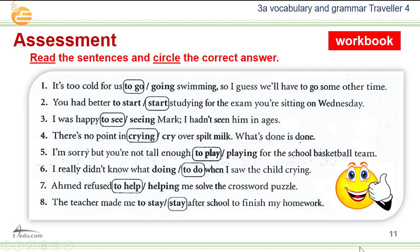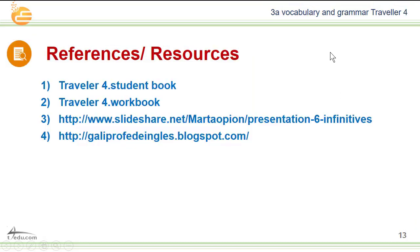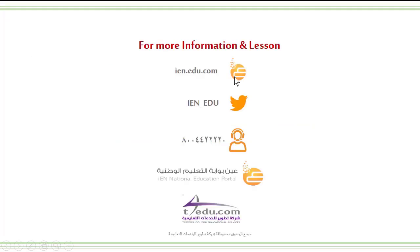This is the end of today's lesson. Today we studied how to form an infinitive and -ing form — an infinitive is 'to' plus base form of the verb, and the negative is formed by placing 'not' before the infinitive. We also studied collocations with get and take. These are today's references and resources. For more information, visit our website, contact our Twitter account, or call us on our free phone. Thank you for listening. Wassalamu alaykum wa rahmatullahi wa barakatuhu.